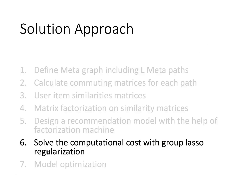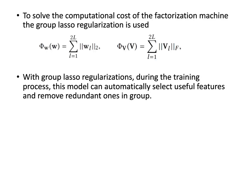The sixth step is solving the computational cost using group lasso regularization. The factorization machine can have high computational cost, which is reduced by group lasso regularization. During the training process, this model can automatically select useful features and remove redundant ones in the group.